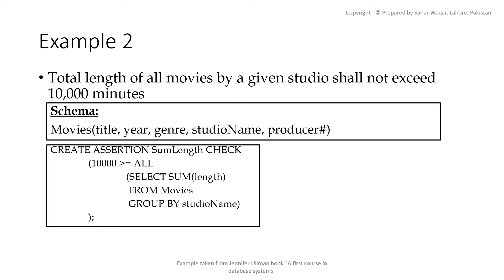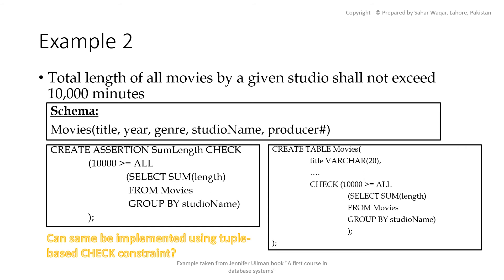However, since this subquery only refers to the same relation and no other, one might ask: should we not implement this using a tuple-based constraint instead? We could add a CHECK clause in the Movie table creation schema — any change that makes this check false would be rejected. But there is an issue: if any tuple is deleted from the Movie table, the tuple-based constraint will not be executed. In this particular case, deleting a tuple only reduces total length, so the condition would not become false anyway.